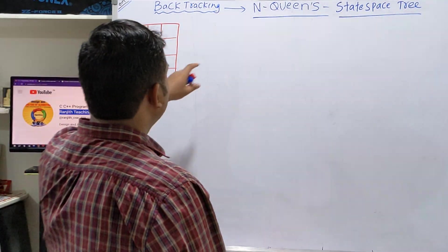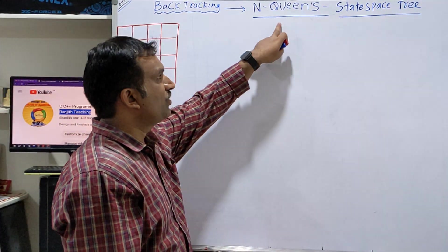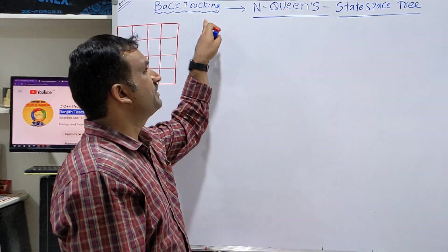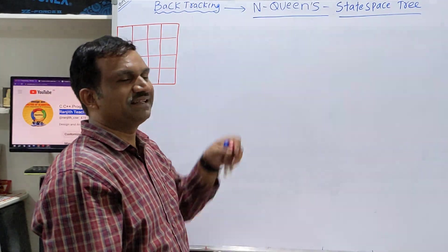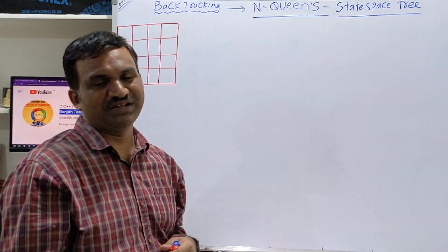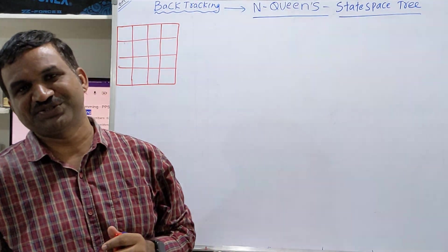N-Queens algorithm using backtracking. Let us draw a state space tree.